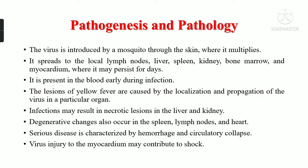Regarding pathogenesis and pathology, the virus is introduced by a mosquito through the skin where it multiplies. It spreads to local lymph nodes, liver, spleen, kidney, bone marrow, and myocardium, where it may persist. It is present in the blood early during infection. Lesions are caused by localization and propagation of the virus in particular organs. Infection may result in necrotic lesions in the liver and kidneys. Degenerative changes may also occur in the spleen, lymph nodes, and heart. The disease is characterized by hemorrhage and circulatory collapse, and virus injury to the myocardium may contribute to shock.